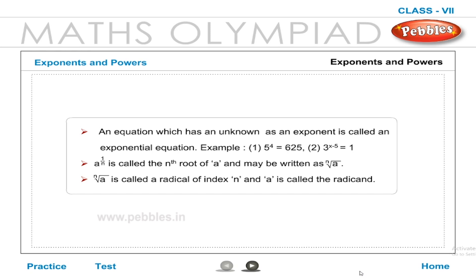A to the power of 1 by n is called the nth root of a, and may be written as n root of a. The n root of a is called a radical of index n, and a is called the radicand.